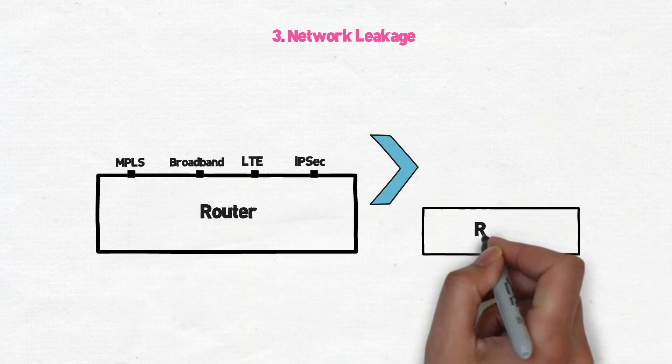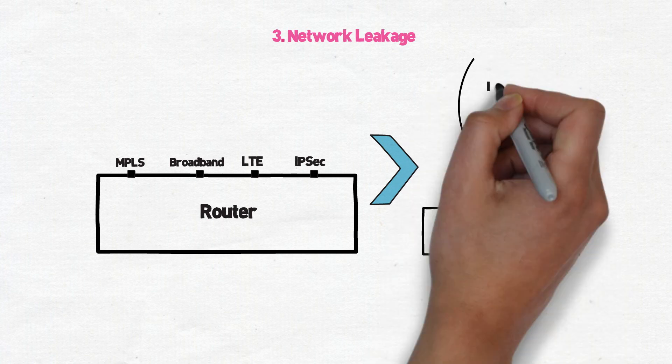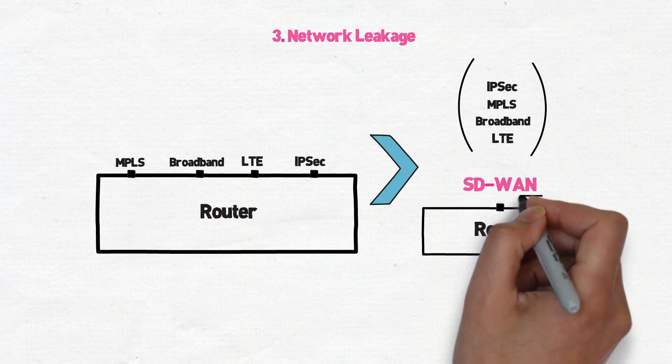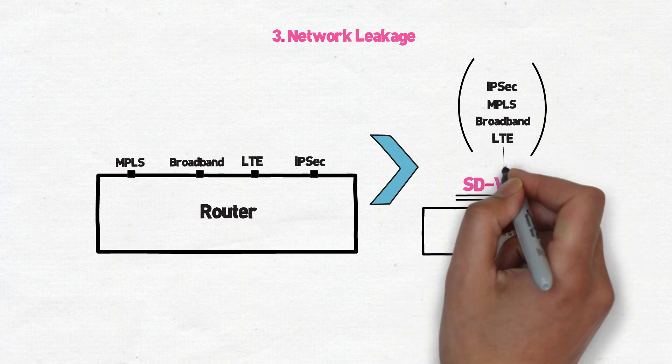To simplify administration, SD-WAN vendors will usually group these interfaces into a single interface to remove the complexity of having to manage rules and policies for each WAN interface. In some cases, this could lead to less than desirable routes to and from protected zones.